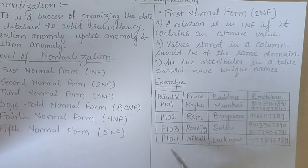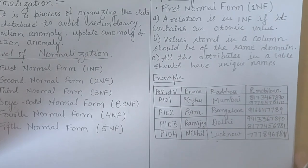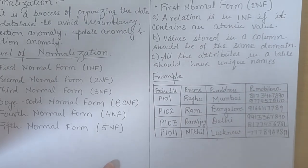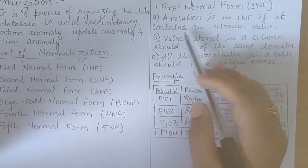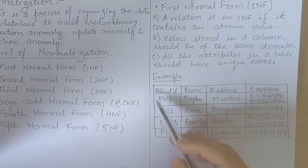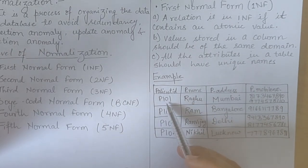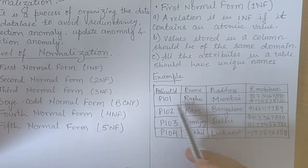Let's see an example. Here is a hospital database where we are recording patient records. We have patient ID, patient name, address, and mobile number. Checking the first rule — a relation is in 1NF if it contains atomic values. For each tuple there should be an atomic value. Patient ID is atomic, patient name 'Ragu' is only one name — no problem. But for mobile number, we are not having an atomic value.